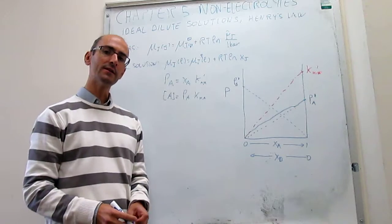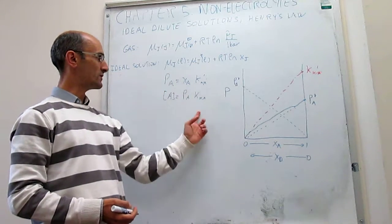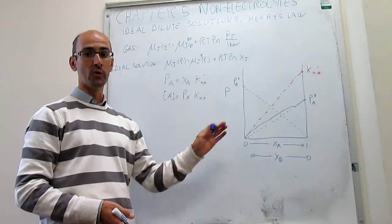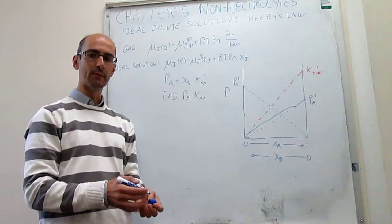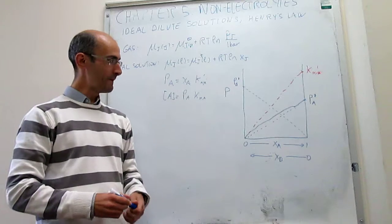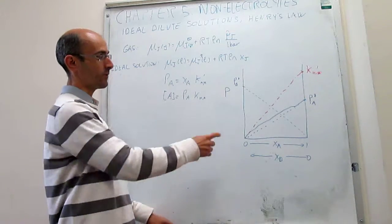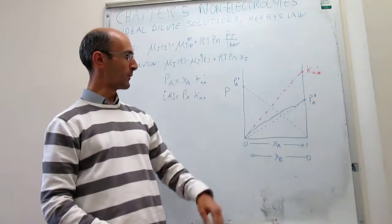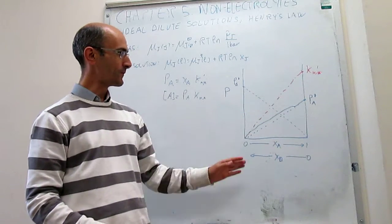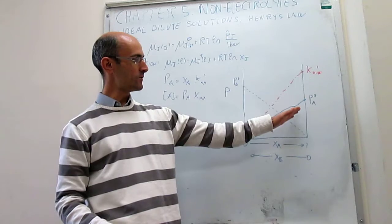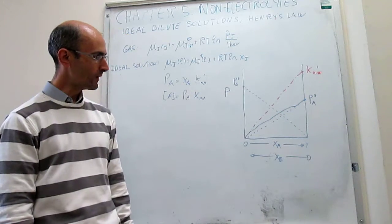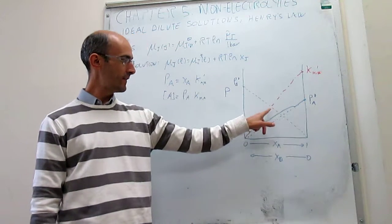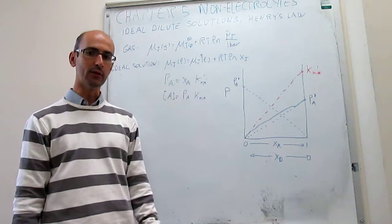What we're going to do in this video is try to see how we can use these laws to write chemical potentials when you are in the range of applicability of Raoult's law. Before we do that, we're going to complete the diagram by showing what happens to the other component in the mixture. For the A component, Raoult's law is satisfied at high concentrations, and Henry's law is satisfied at low concentrations.